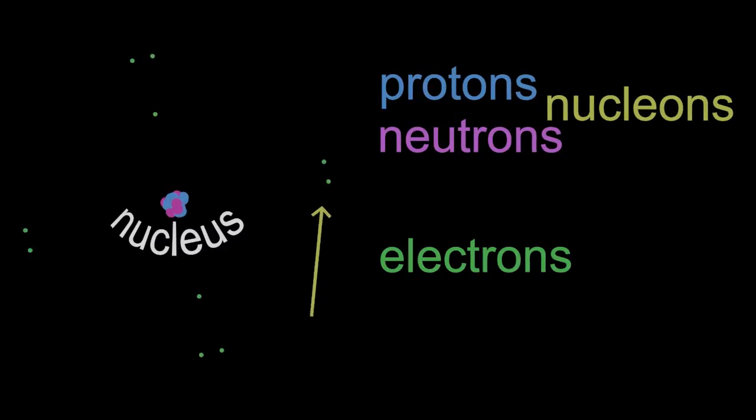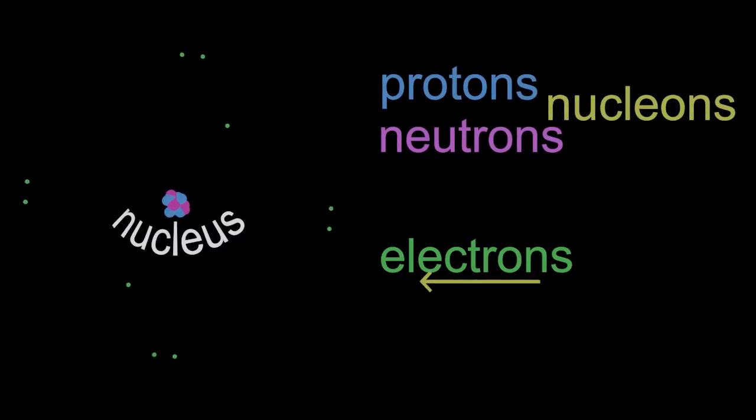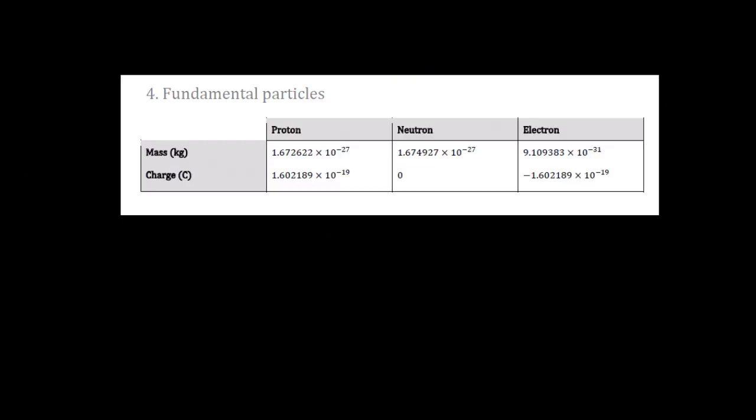Electrons are in orbit around the nucleus in the atom. Now, that's a simple diagram. More complicated ones later on will explain the details.